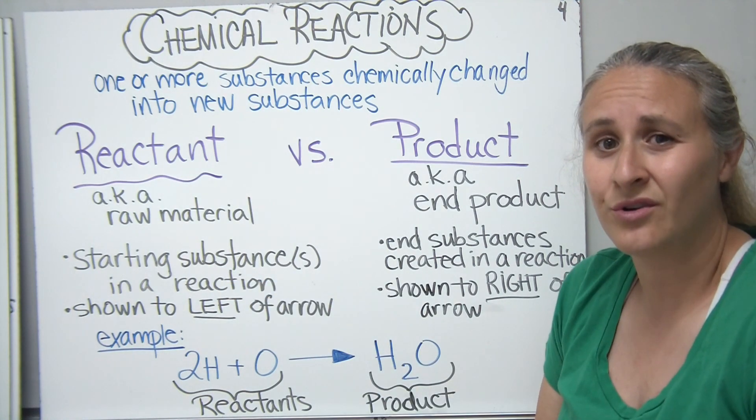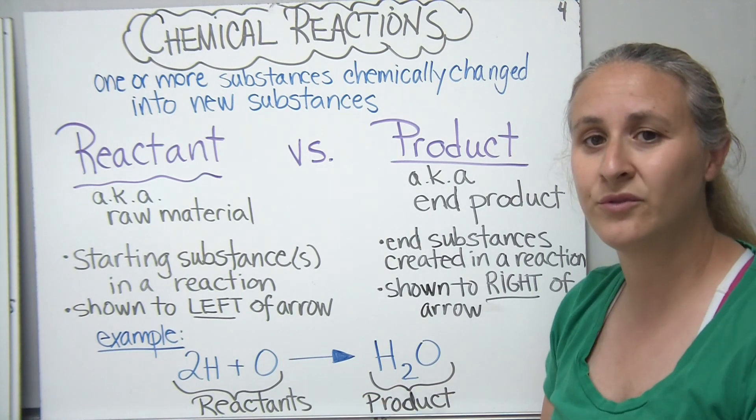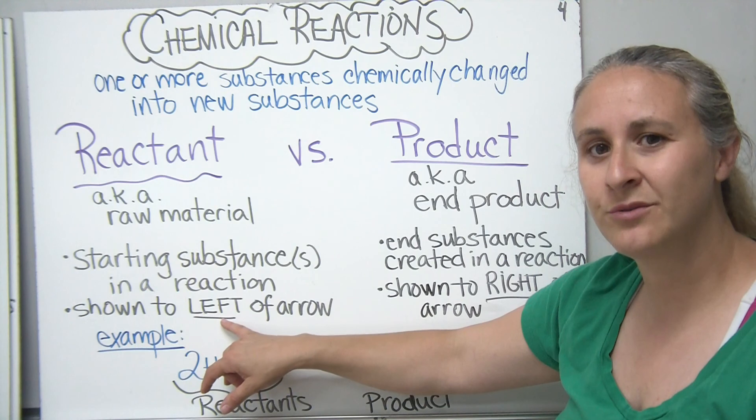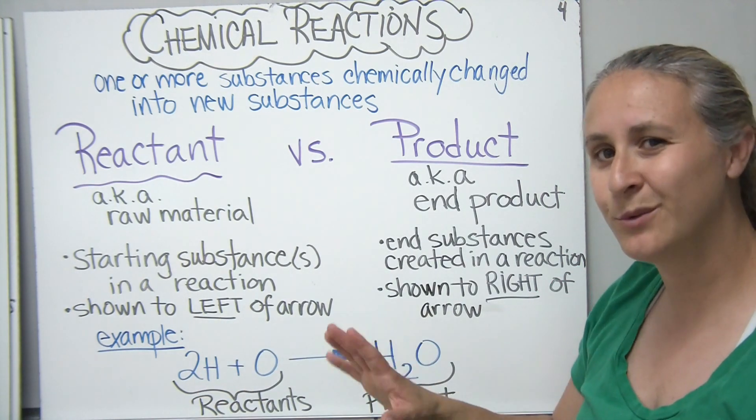And that's because those are the starting substances in your reaction. Those are the things that you start off with, the raw materials that you put together in order to form this new product. These are typically shown to the left of the arrow when you write out the chemical reaction.